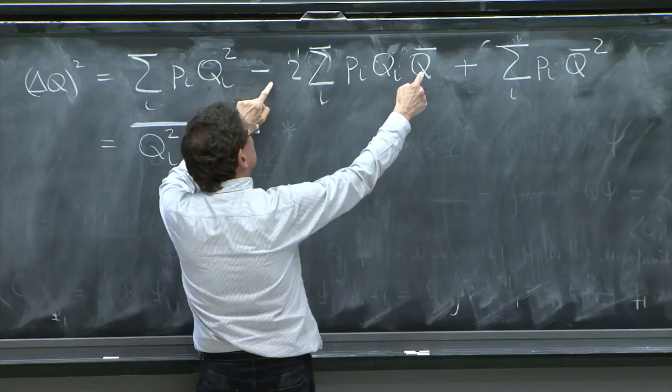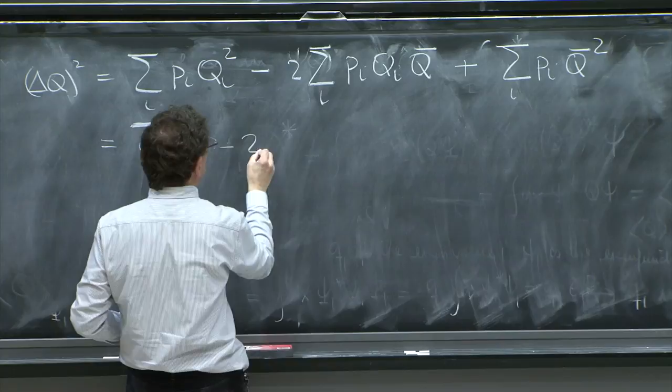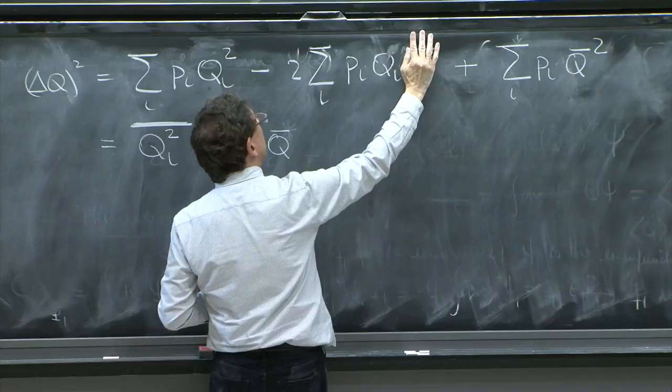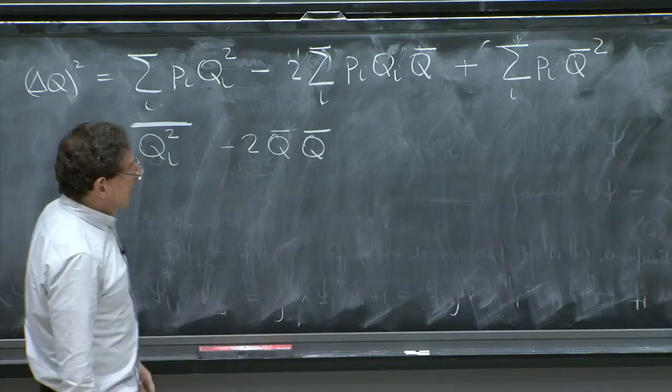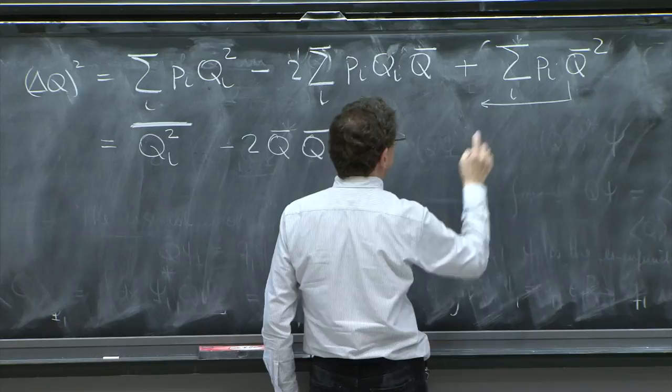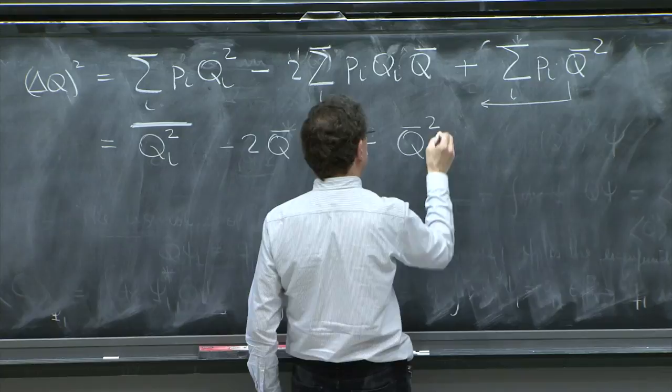What is this? This is a little more funny. First you should know that q bar is a number, so it can go out. So it's minus 2 q bar. And then all that is left is this, but that's another q bar. So it's another q bar. And here you take this one out because it's a number. And the sum of the probabilities is 1. So it's q bar squared as well.